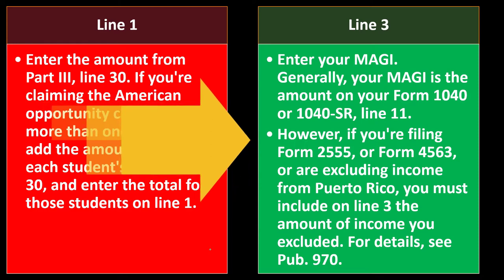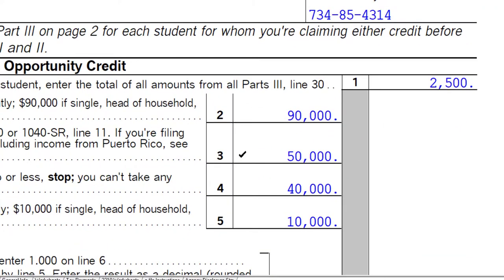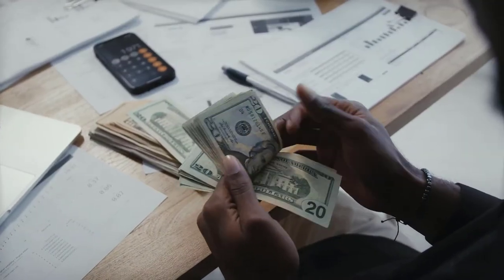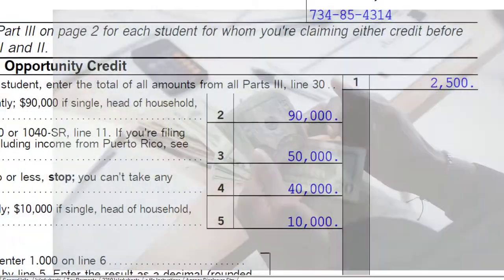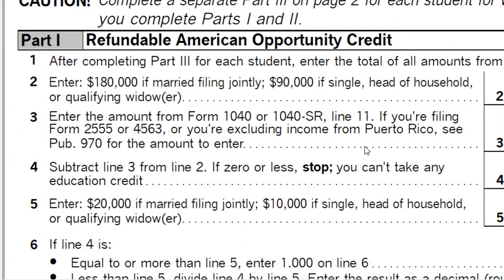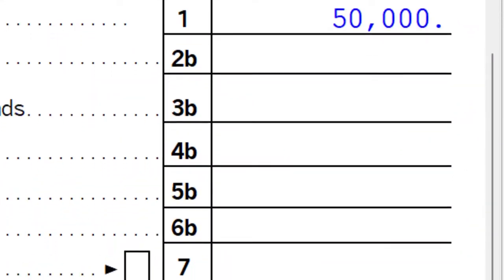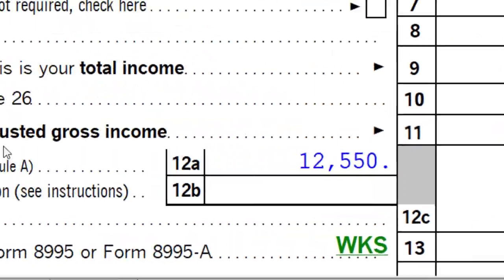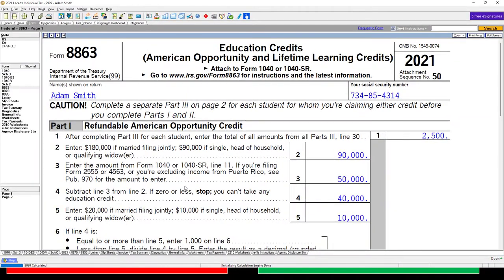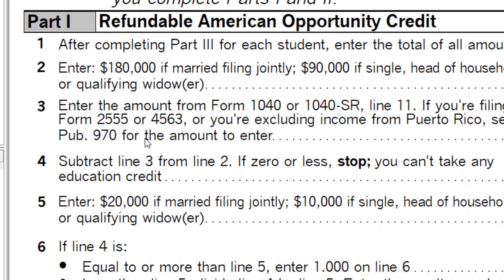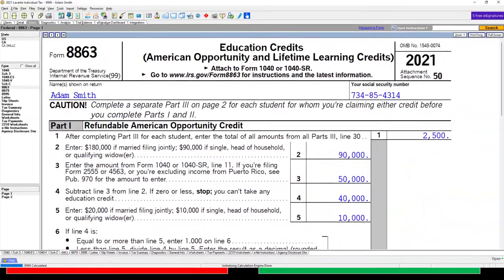Line 3: enter your MAGI — your modified adjusted gross income. Generally, your MAGI is the amount on Form 1040 or 1040-SR, line 11. This is important for income threshold considerations. In our example, we have $50,000 on line 11. It gets modified if needed for things like Form 2555 or Form 4563.